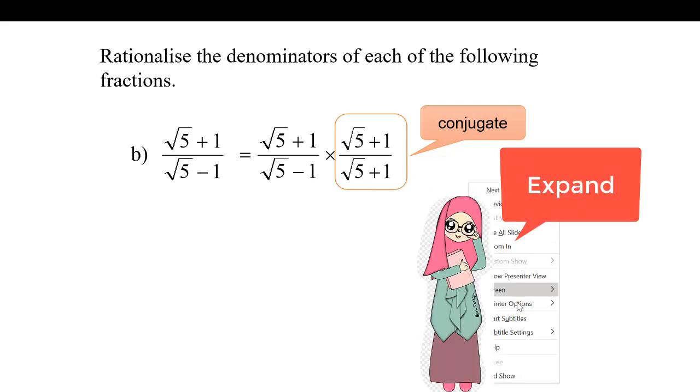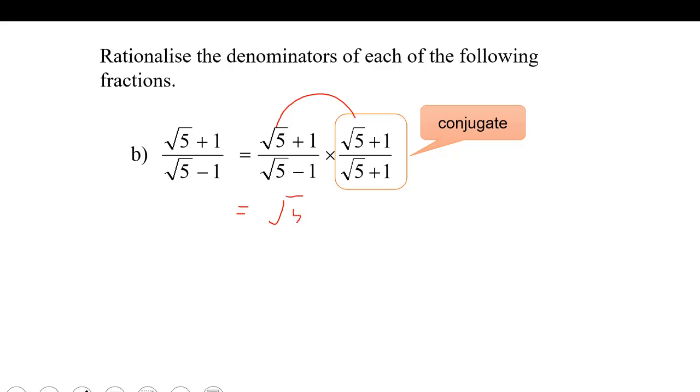So the first step is to expand. We're going to multiply square root of 5 with square root of 5. So 5. We have square root of 5 squared, and then plus.